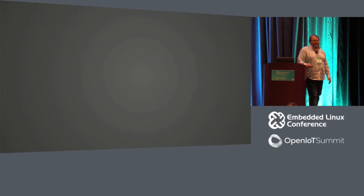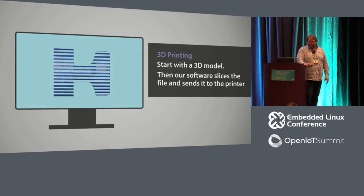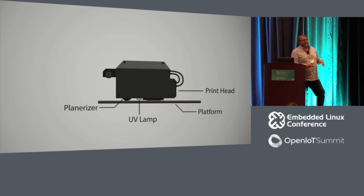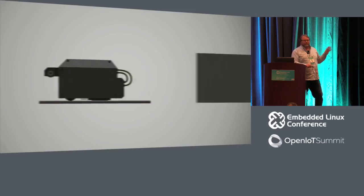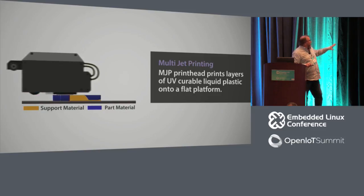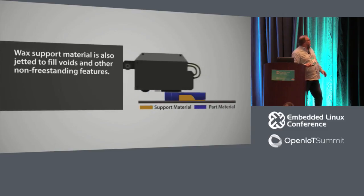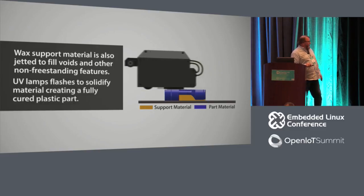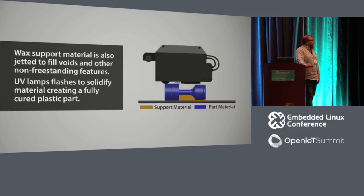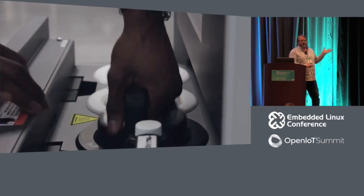Here's a video our marketing department put together about this technology. You can see how the object is sliced into layers, and then the printhead with hundreds of individual jets fires something like 35,000 to 40,000 times per second, laying down millions of little droplets — building up with wax to support overhanging parts and plastic for the part itself, with a lamp firing to harden the plastic. The video also shows how easy it is to replace the material — just pop it out, put in the new material. Each jug is only a few hundred dollars.